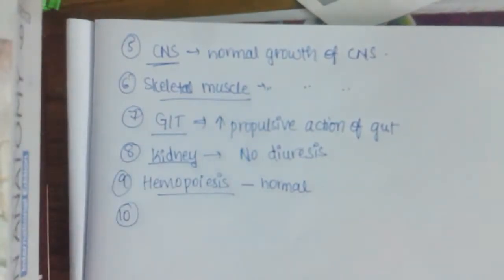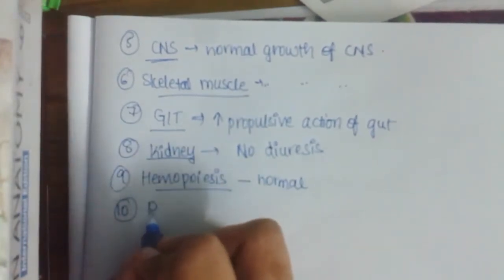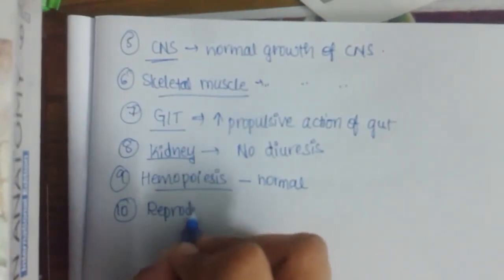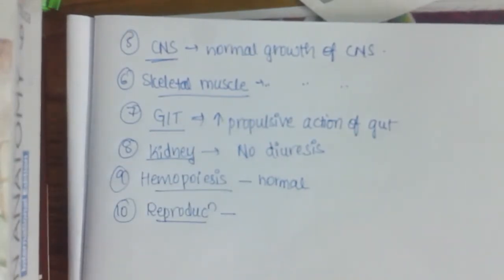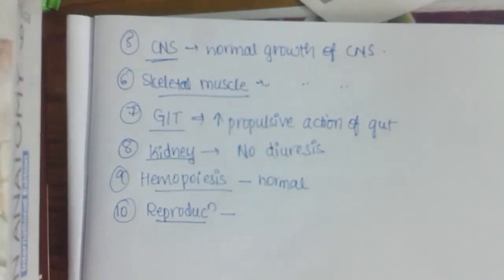The tenth and final action of thyroid hormones is on reproduction. Thyroid hormone is necessary for normal reproduction and maintenance of the menstrual cycle. Decreased thyroid hormone may lead to amenorrhea and infertility, whereas hyperfunctioning of thyroid hormones may lead to increased menstrual cycles.